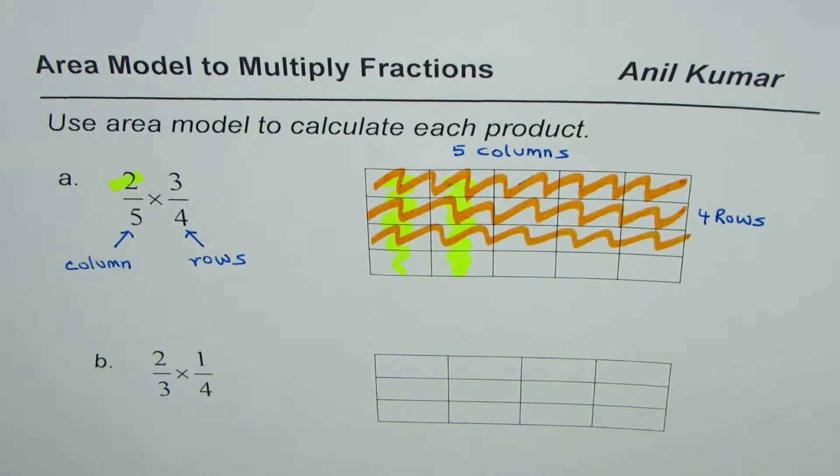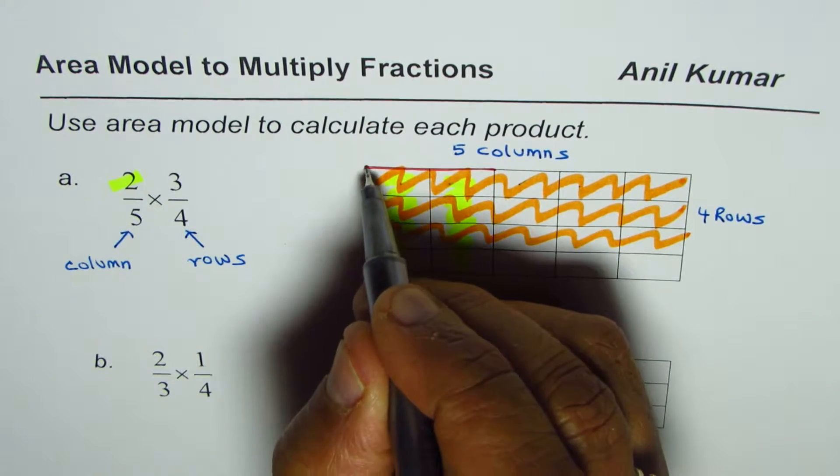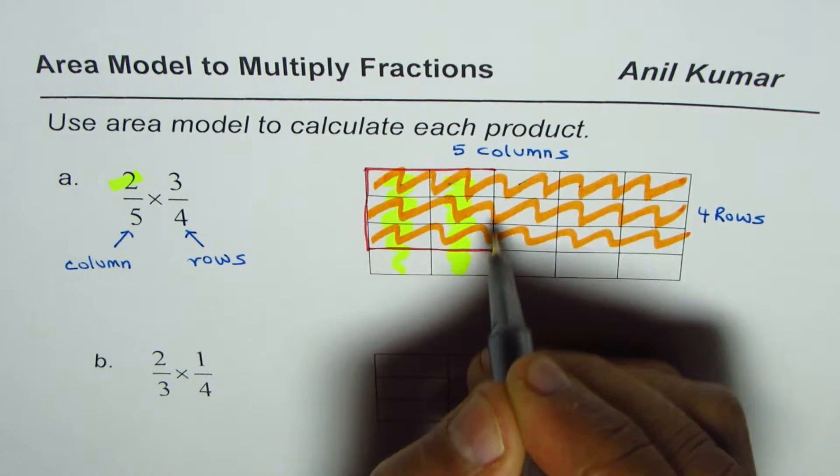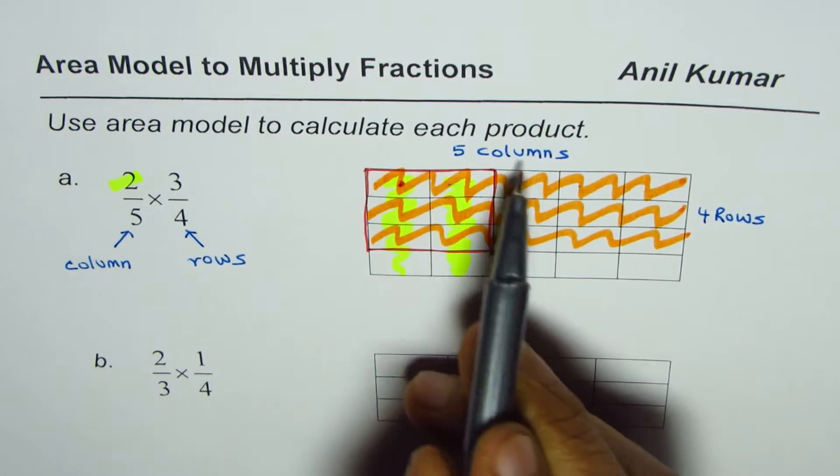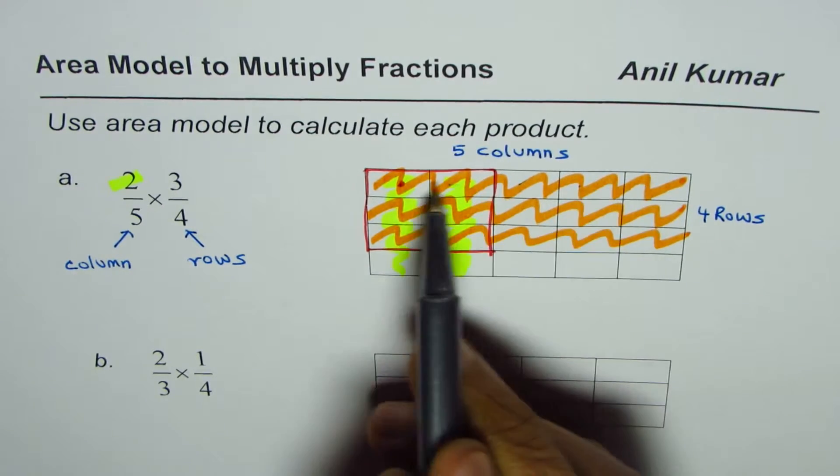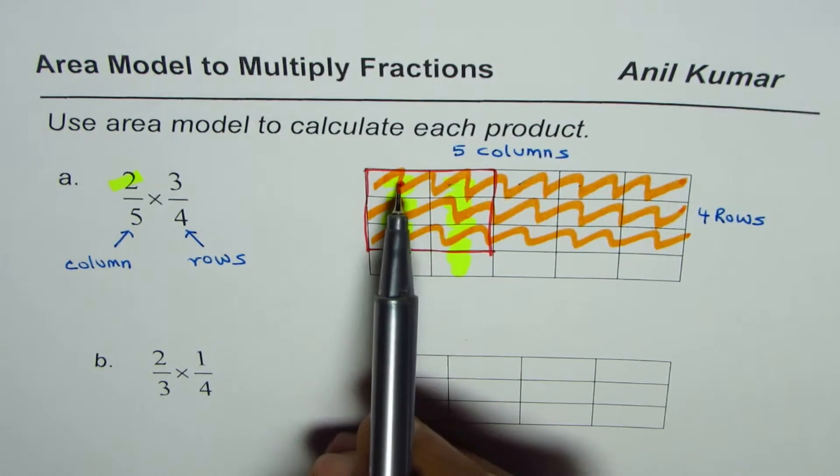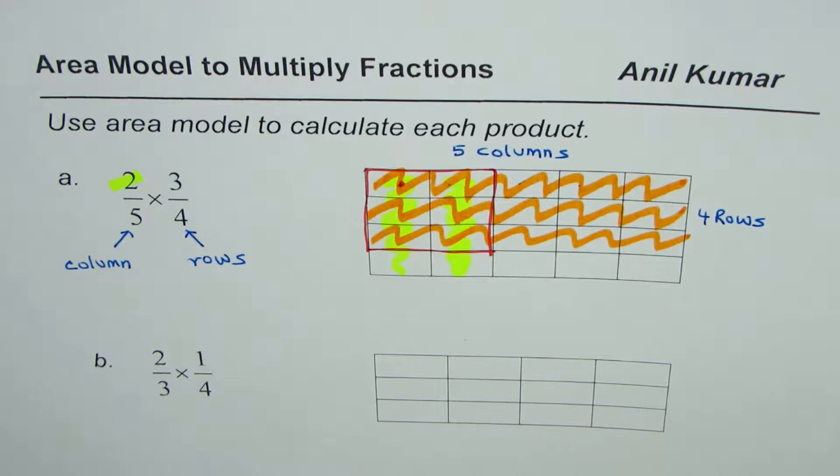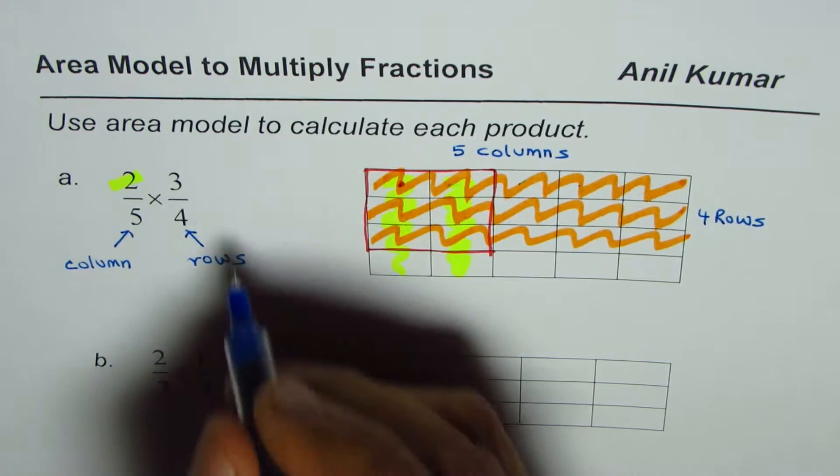So we have to select three out of four rows. Let me select these three rows, so these are three rows one, two and three. The product of fractions basically is the common area. As you can clearly see the common area between the rows and columns is right there.